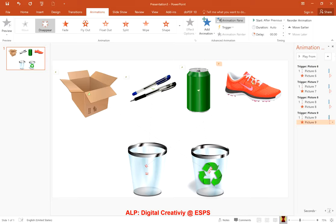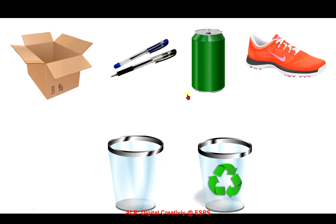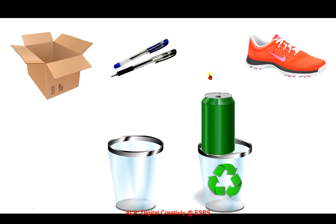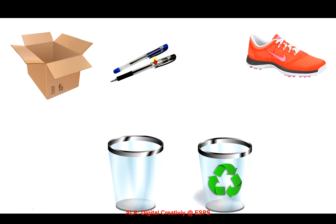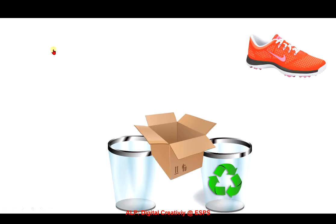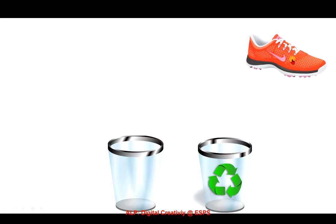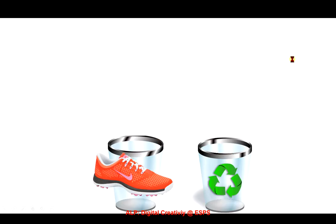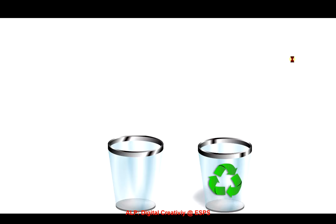Let's try a different order and see whether it still works. Maybe now I start with the can first — can can be recycled. Then maybe pen next — cannot be recycled. Box — it can be recycled. And then the shoe — cannot be recycled. So this shows that the order of pictures that you click on doesn't matter. Are you ready to learn how to make this interactive game?